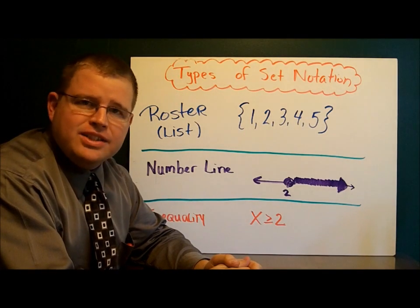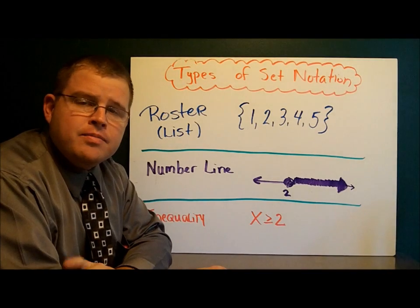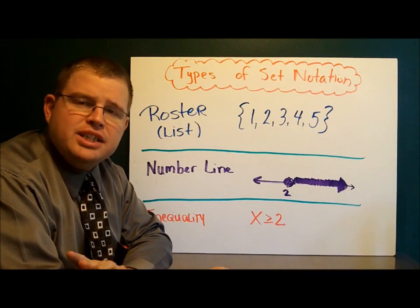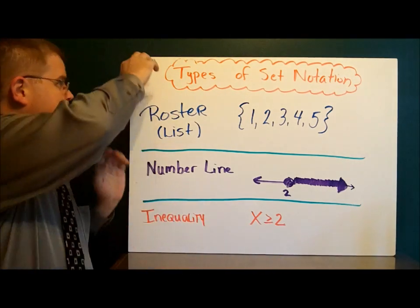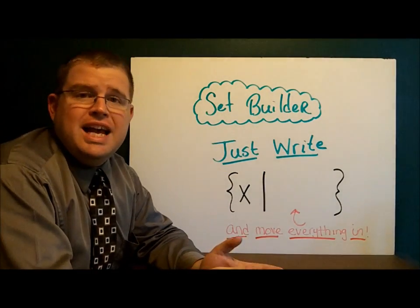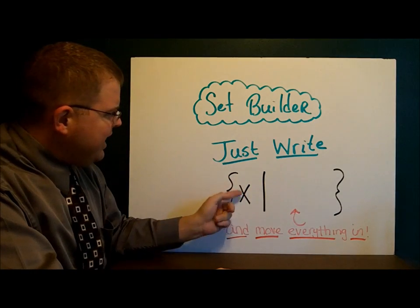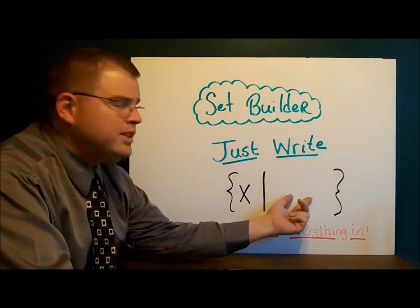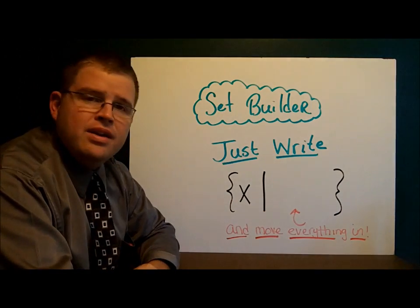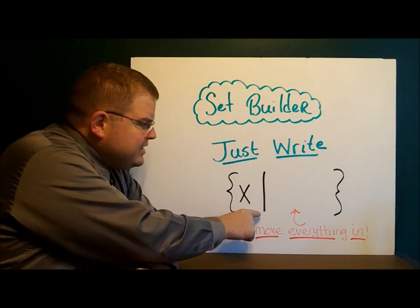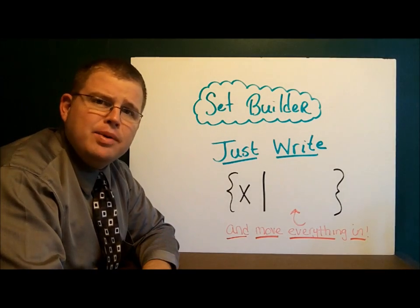We've seen multiple ways you can write sets: roster notation where we list the elements, as a number line, or using an inequality. We're going to take a look at one more type of notation today that combines all of these into one package — it's called set builder notation. Set builder notation is very simple: all you have to do is write squiggly braces, an x, and a line — everything else goes right there. The way we read this is 'x such that' and then whatever our set is.